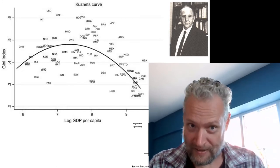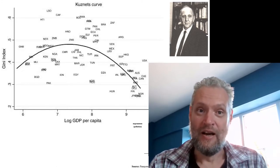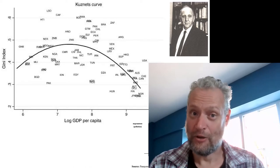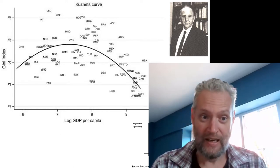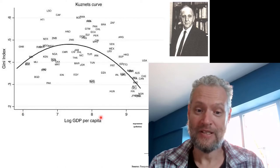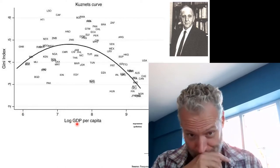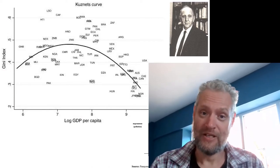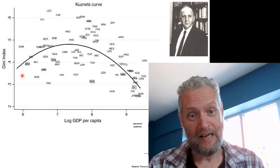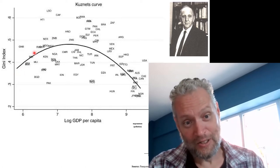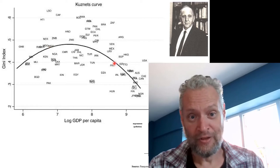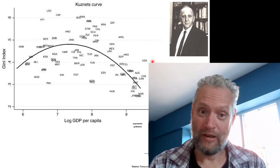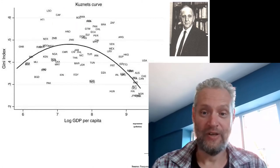Kuznets argued that subsistence economies are very egalitarian, and if they grew richer, they grew more unequal, but then if they grew richer still, inequality started falling again. You see that displayed in this graph — here we have the logarithm of GDP per capita, here the Gini index, a measure of economic inequality. With a bit of imagination you indeed see a quadratic curve: poorer countries are more equal, richer countries are more equal, but in-between countries are fairly unequal.